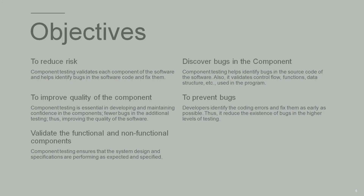Sometimes the development team is working on different components separately. For example, in an organization with 10 developers, four may be working on one component and six on another, essentially building two functionalities together. These components are given to the testing team to verify without integration. If everything works fine, they then integrate and pull the functionality together, which reduces risk.